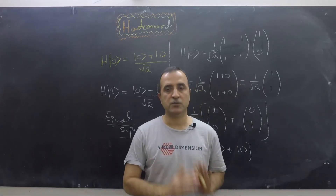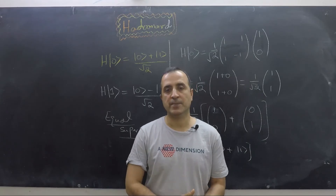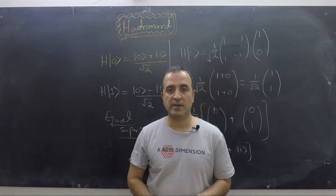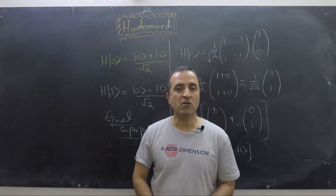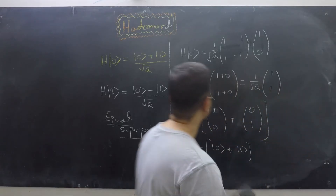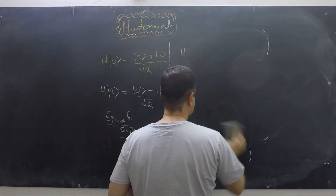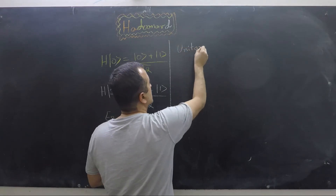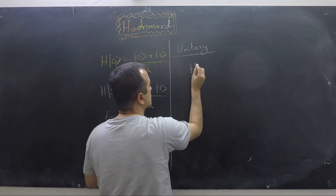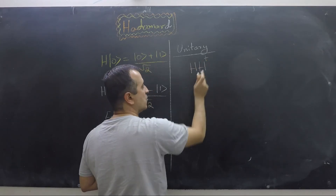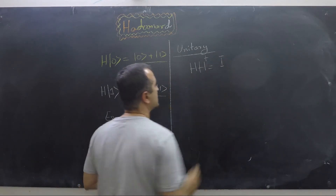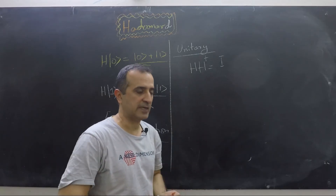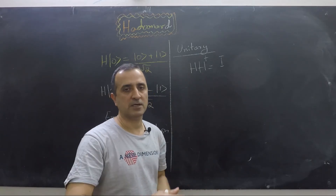All quantum gates must be unitary. But there are many quantum gates which are also Hermitian, and the Hadamard gate is one of those that is both unitary and Hermitian. For a unitary gate, its inverse is equal to its conjugate transpose. So we can say H times H† equals the identity — that is the definition of unitarity. The conjugate transpose means you take the transpose and change the sign of all imaginary terms.